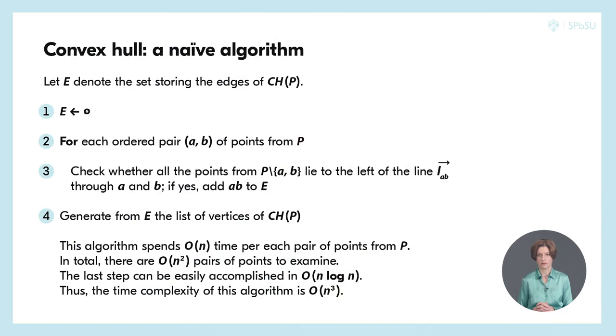The observation we have made immediately leads to the following algorithm. Let E denote a set that will store the edges of the convex hull. First, we initialize E with an empty set. Subsequently, for each ordered pair AB of points from P, we check whether all the other points from P lie on the left of the directed line through the points A and B.